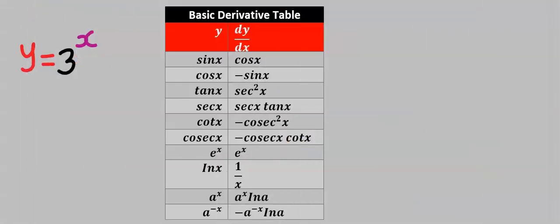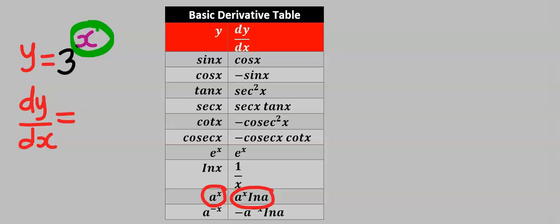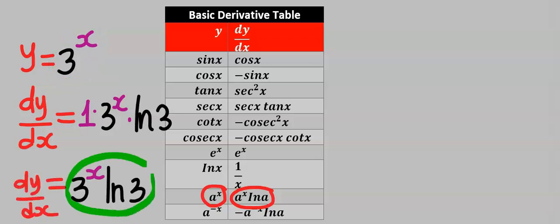Respecting this basic rule — that when you differentiate any constant to the power of X, it gives you that constant to the power of X multiplied by the natural log of that constant — to find the derivative of 3 to the power of X, I differentiate and get 1, then recopy the expression and multiply by the natural log of this constant without the X. This becomes our dy/dx.